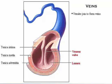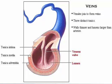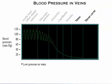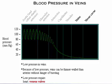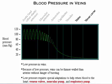Venules join to form veins. Veins usually have three distinct tunics, but their walls are always thinner and their lumens larger than those of corresponding arteries. The tunica adventitia is the heaviest wall layer. In the graph of blood pressure, note the low pressure in the veins. Because blood pressure within veins is low, they can be much thinner walled than arteries without danger of bursting. However, the low pressure condition demands some special adaptations to help return blood to the heart.